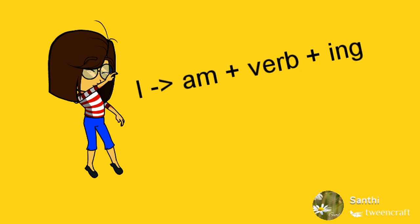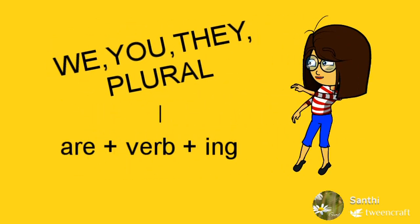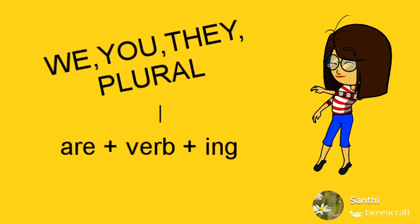For the pronoun I, we have to use am and add ING with the verb. For the pronouns we, you, they, and plural nouns, we have to use are and add ING with the verb.